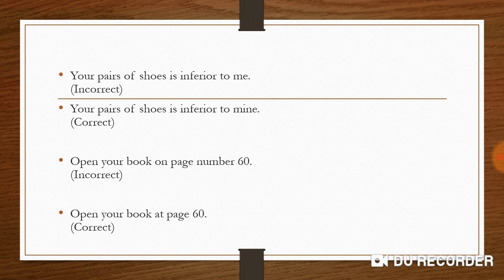Next slide: 'Your pair of shoes is inferior to me.' This is wrong — it means your shoes are inferior to me as a person. Shoes should be compared to shoes, not to a person. 'Inferior' always comes with 'to,' not 'than.' So the correct sentence is: 'Your pair of shoes is inferior to mine.'